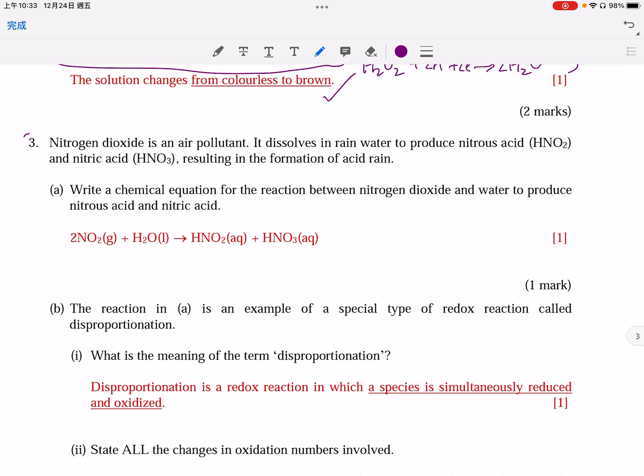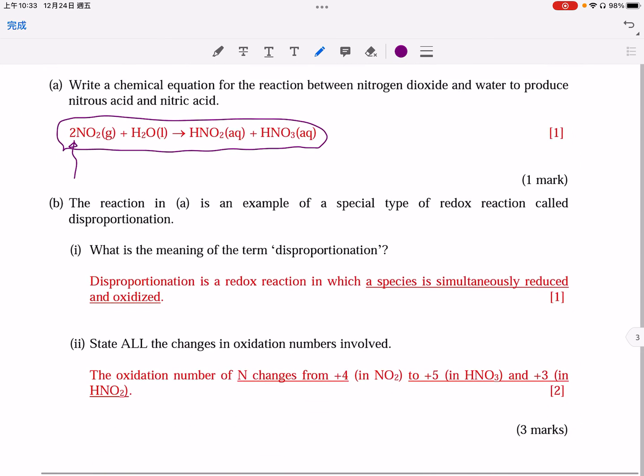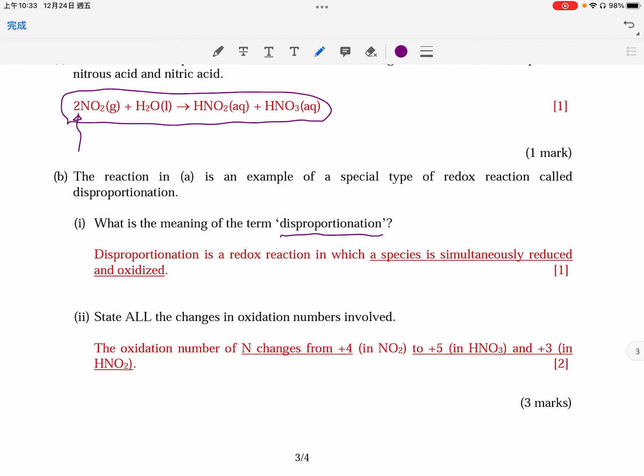Question number 3. This reaction should have been discussed in book 2, in the topic air pollution. Just to remind you the 2, the coefficient 2 here. Part B, meaning of the term disproportionation. When I marked your papers, I found that quite a number of you could not write the word species. Let me tell you. If you write elements here, it is an incorrect idea. If you write compound here, it is also an incorrect idea.